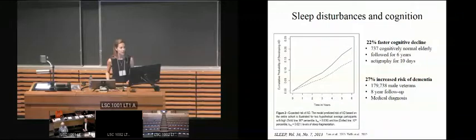And there is some indication that the sleep disturbances occur early in the disease. In cognitively normal, healthy, elderly adults, it's been shown in some studies that those with sleep disturbances are at a 22% faster rate of cognitive decline if followed over six years. And in a large veteran study that looked at over 150,000 veterans, they showed that those veterans that reported sleep disturbances or had been diagnosed with a sleep disorder in their medical records were at a 27% increased risk for dementia. And I stress that these studies were done in cognitively normal adults, not in individuals with dementia. So, it suggests that perhaps these sleep disturbances are occurring early in the disease and increasing risk of later cognitive decline.